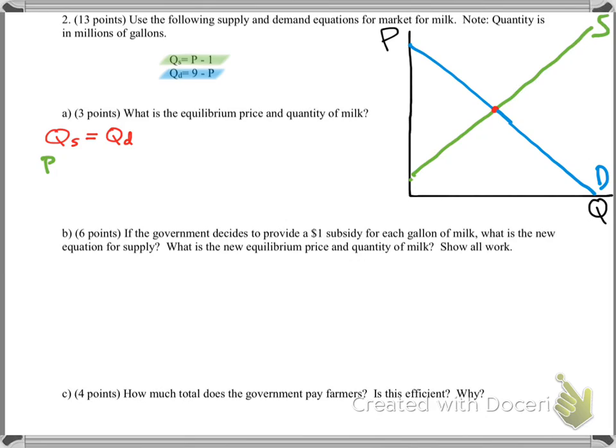So the quantity supplied is P minus 1. And the quantity demanded is 9 minus P. Those are the equations for the two lines. And we're going to solve for the equilibrium price, or P. So you add P to both sides, and you get 2P equals 10, and that means P equals 5. So your price is at $5.